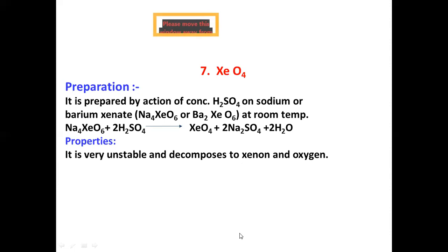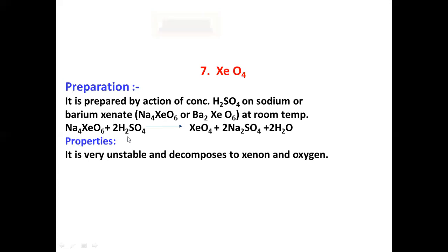Xenon tetraoxide is prepared by the action of concentrated H₂SO₄ on sodium or barium xenate at room temperature. Xenon tetraoxide is produced. It is very unstable and decomposes to xenon and oxygen.